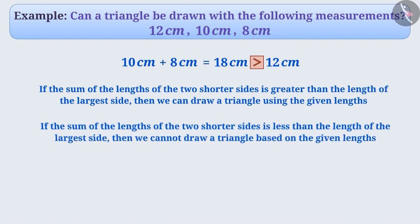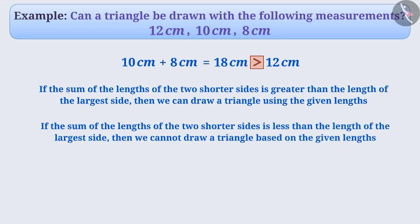But if the sum of the lengths of the two shorter sides is smaller than the length of the largest side, then we cannot form a triangle based on the given lengths. Here, the sum of the lengths of the two shorter sides is 10 cm plus 8 cm, which equals 18 cm, and the largest side is 12 cm. Since 18 cm is greater than 12 cm, we can say that a triangle can be formed with the lengths 12 cm, 10 cm, and 8 cm.